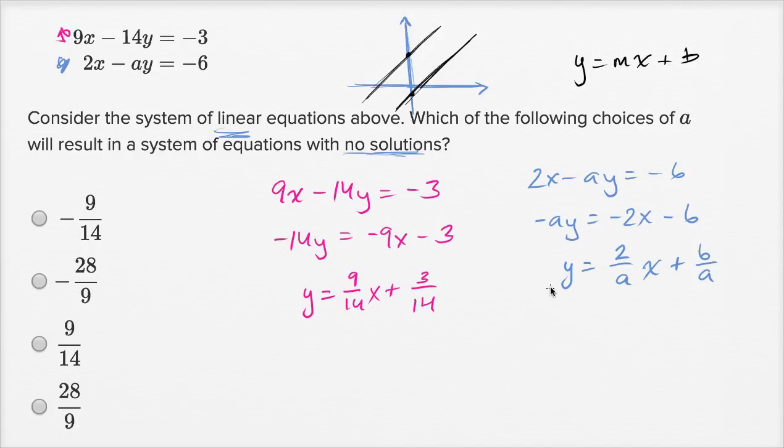Alright. So we need to set up a situation where 2 over a is equal to 9 over 14. These two things have to have the same slope. And then when we're able to figure out that a, we have to verify that they have different y-intercepts. Because if they have the same slope and the same y-intercept, instead of having no solutions,